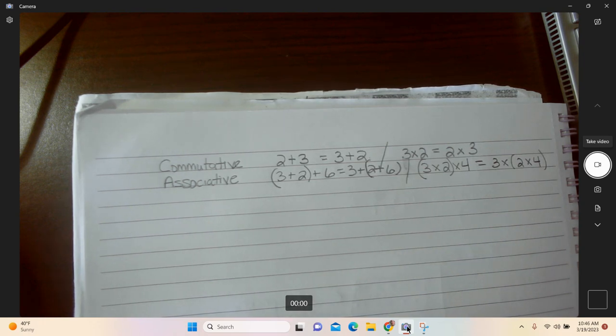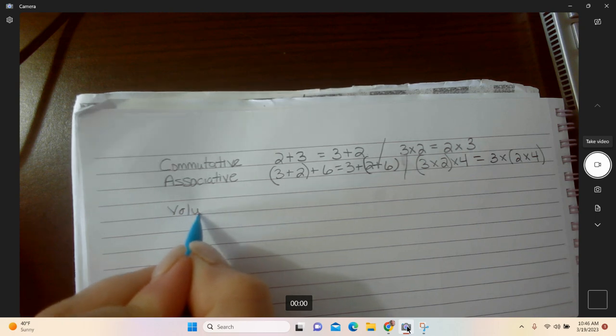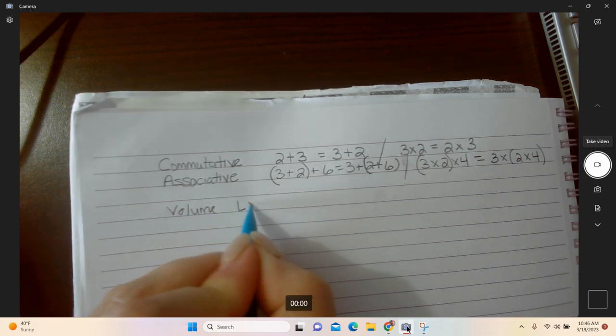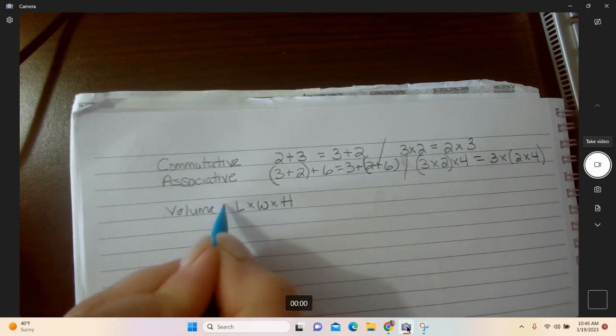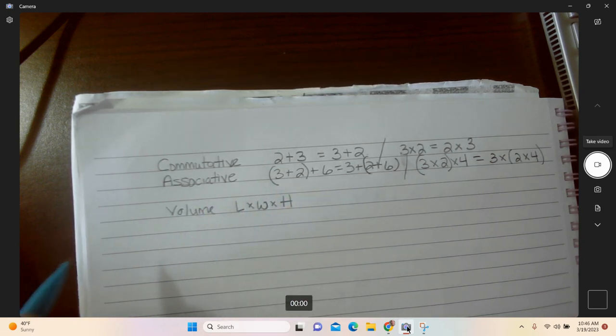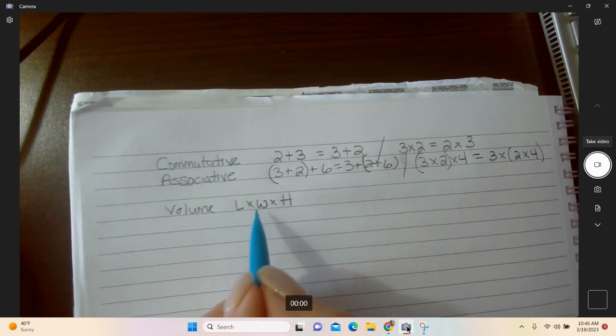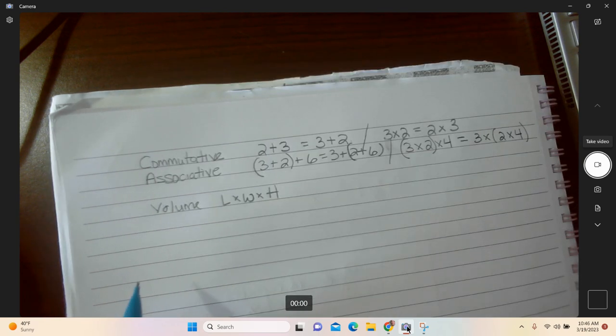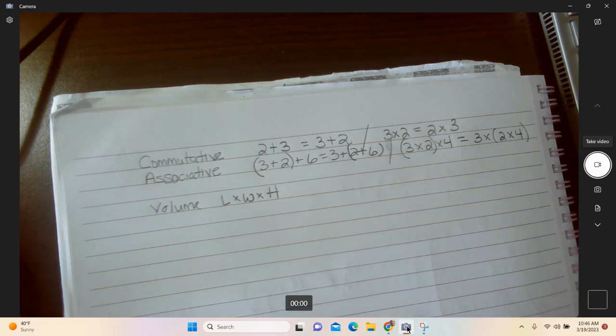And you know that from doing volume, it doesn't matter which order we did these. We could find the volume of a rectangular prism whether we multiplied the height and the width or whether we did the width and the length. It didn't matter which thing we did first. So those are our two main properties. And with that being said, let's go and take a look at our practice problems for today.